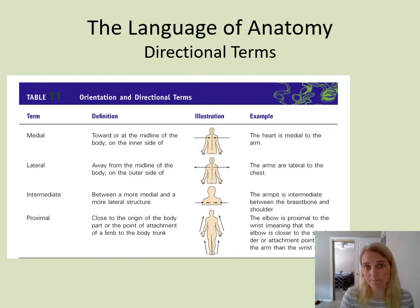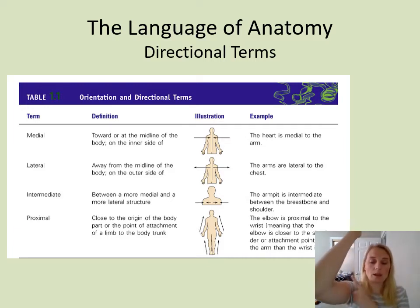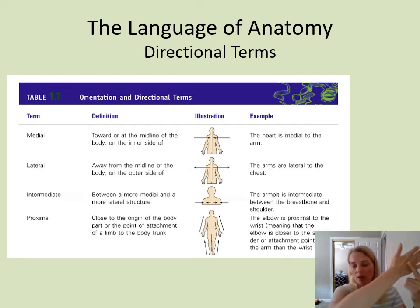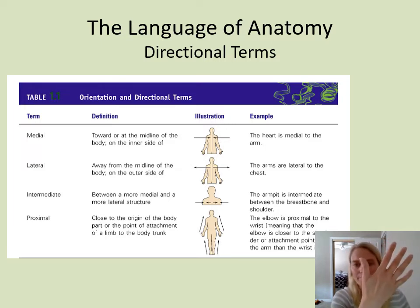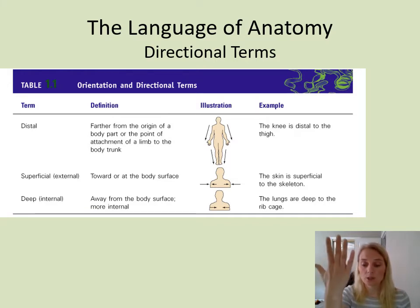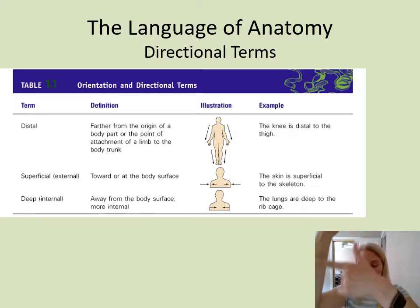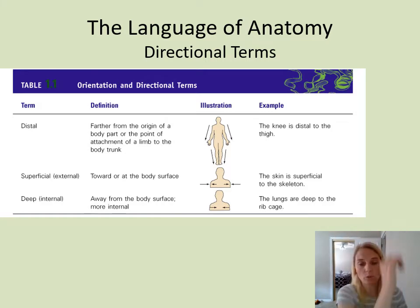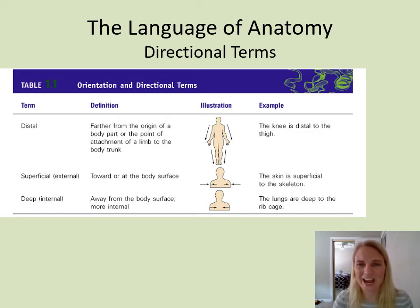Proximal means close to the beginning or attachment point of something — usually associated with your limbs. For example, my shoulder is proximal to my elbow because it's closer to the attachment point. If talking about my wrist and my elbow, my elbow becomes proximal because it's closer to my shoulder than my wrist is. My wrist is proximal to my fingers. The opposite is distal — further away from that attachment point. My fingers are distal compared to my wrist; my wrist is distal compared to my elbow. We don't really use proximal and distal for the head, face, or trunk because there's no attachment point — you'll mainly see these terms associated with the limbs.